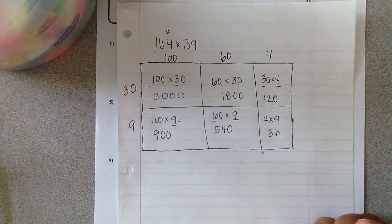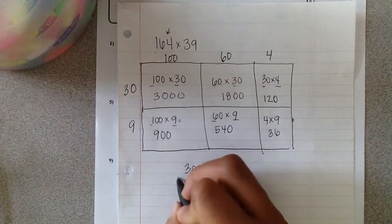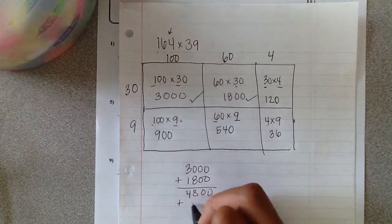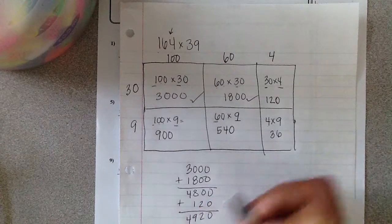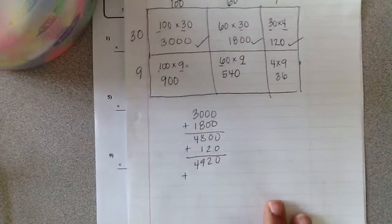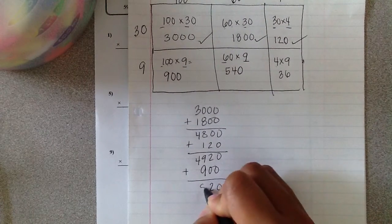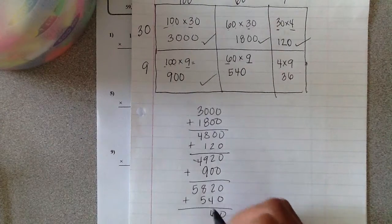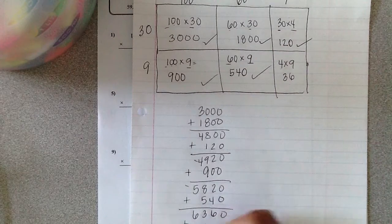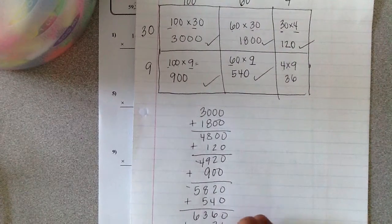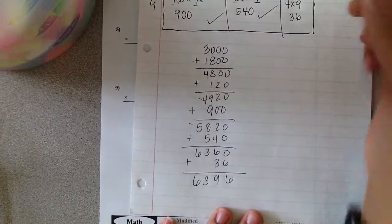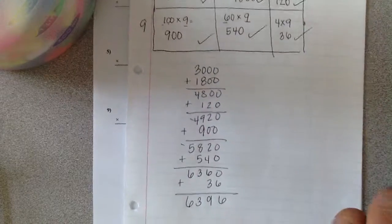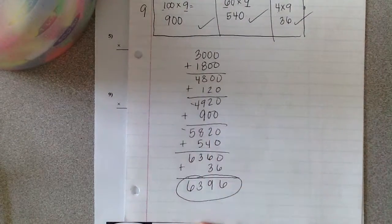Now these are all called partial products, so I need to add all those together. 3,000 plus 1,800 equals 4,800, and I can check those boxes off. Plus 120. Plus 900. Plus 540. Plus 36. You can use graph paper if you need to help you keep this part aligned. The final answer should have been 6,396.